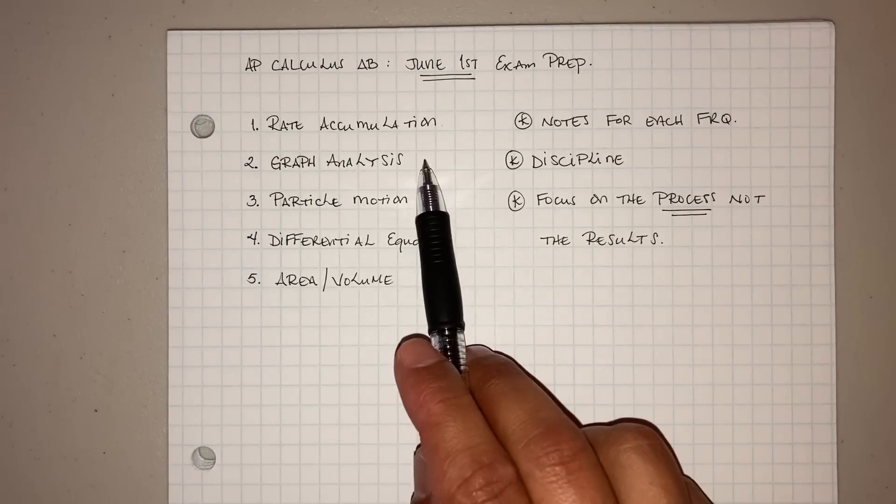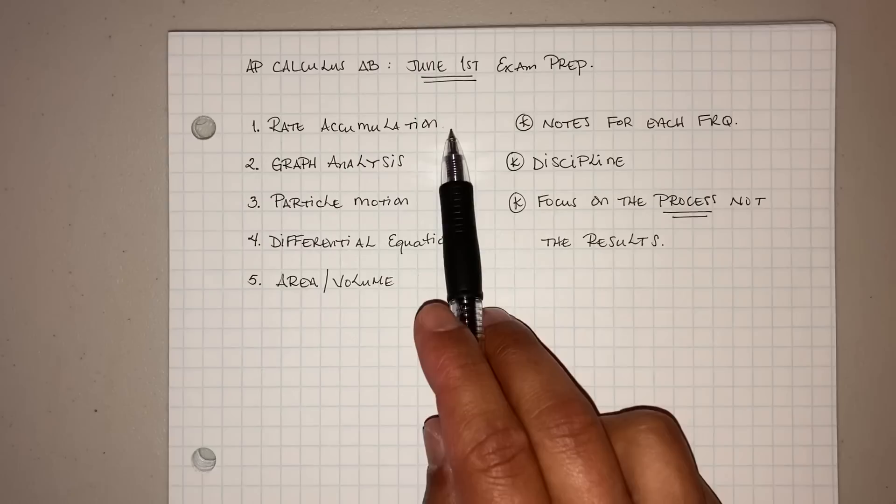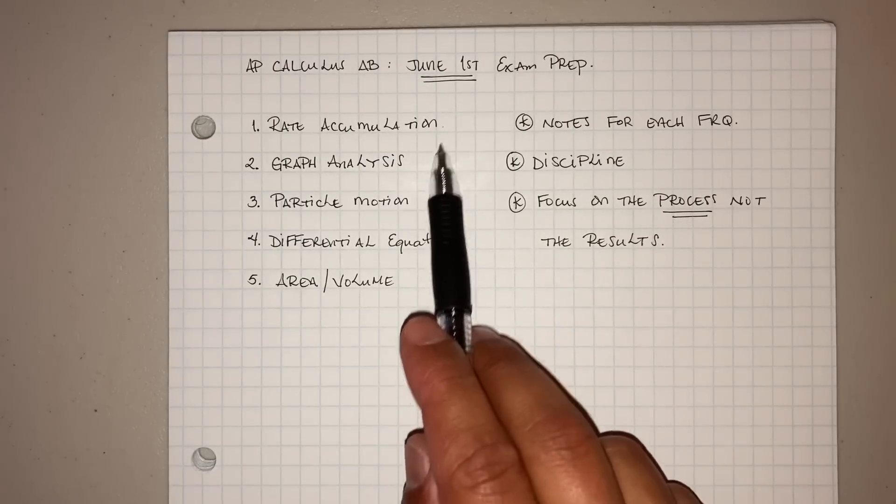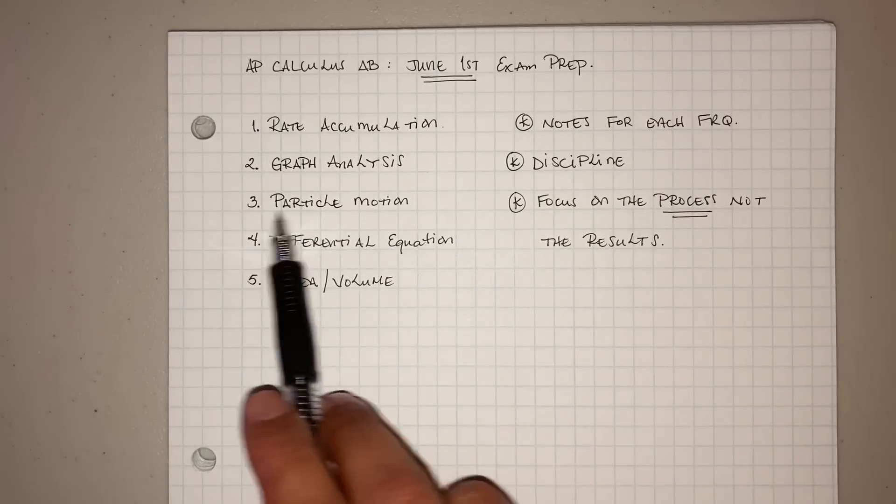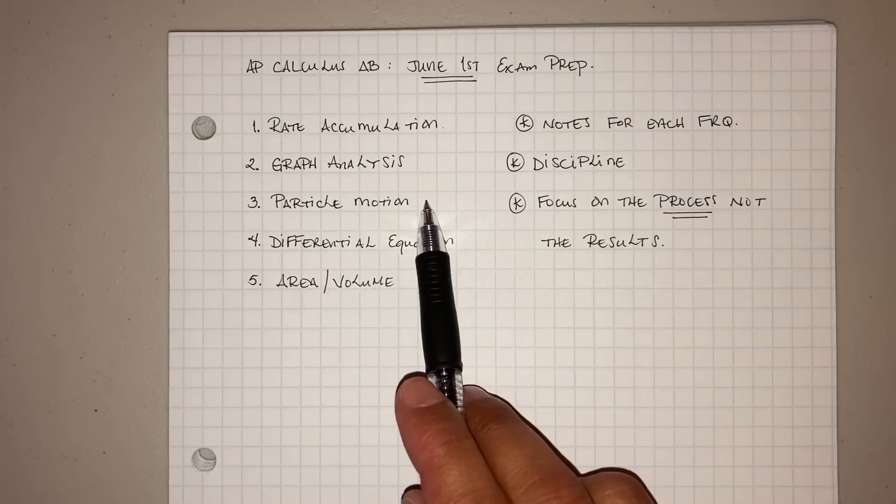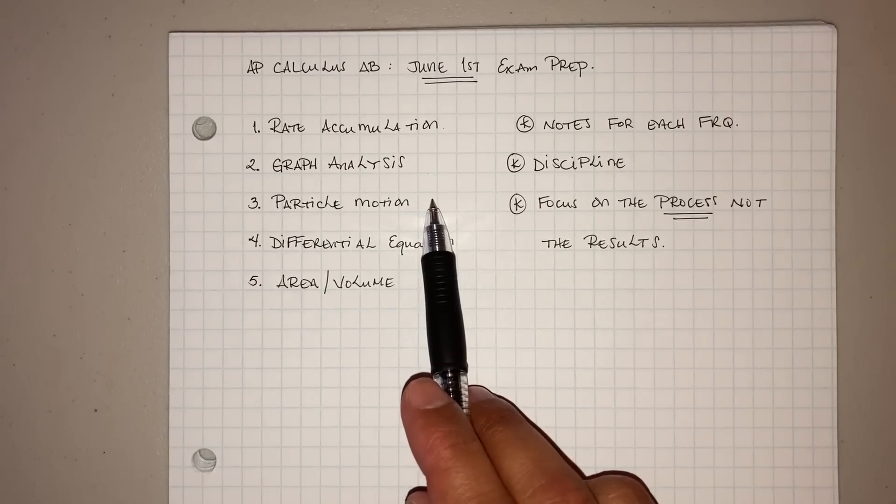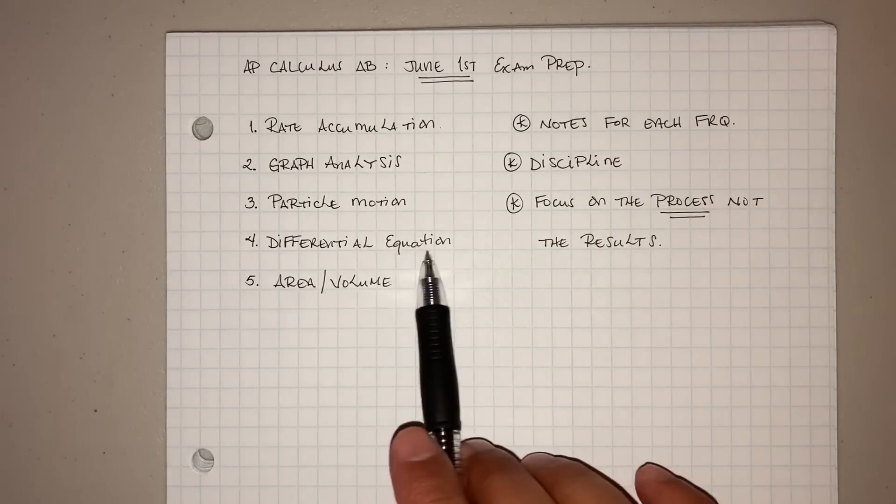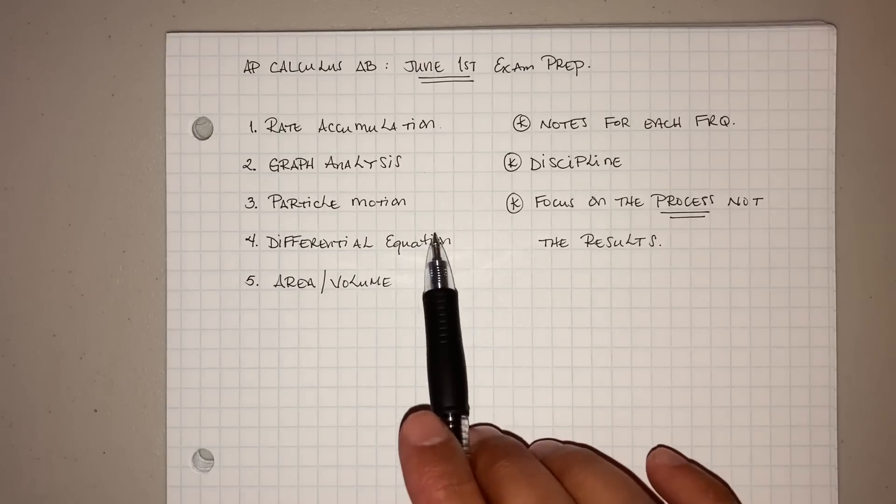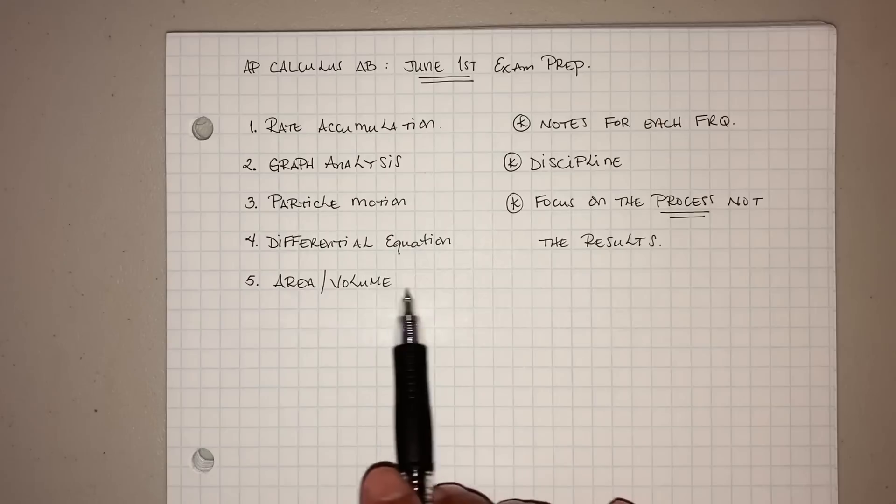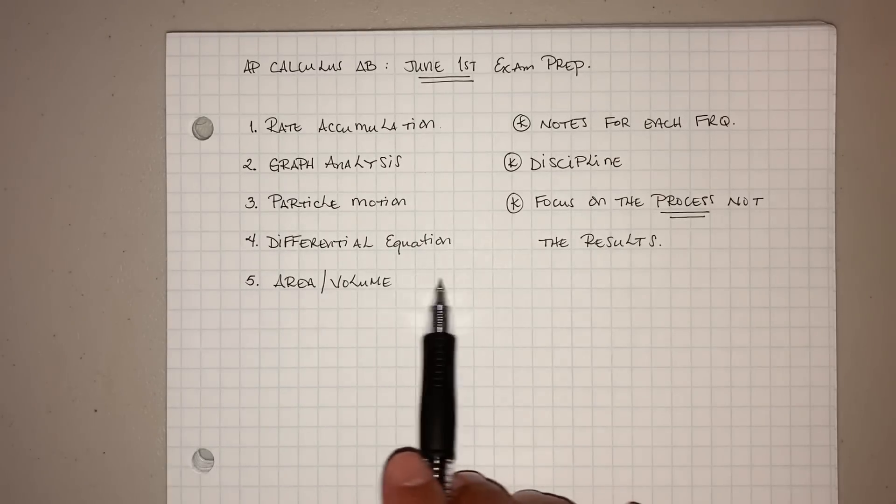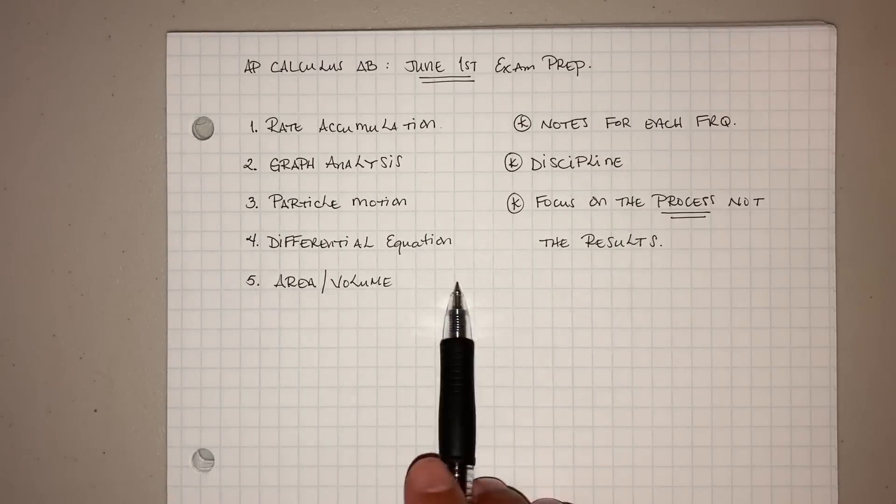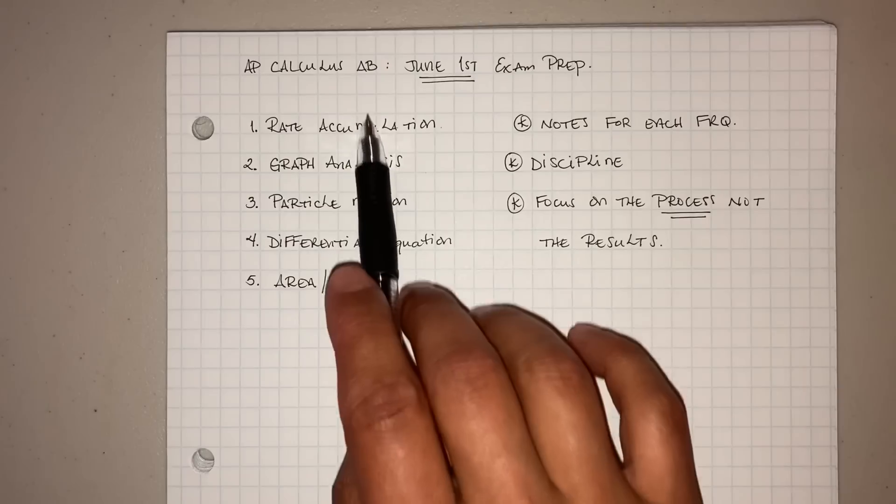You also get graph analysis every single year. Particle motion, that's also in there every single year. That's why they're my top three. And then differential equation, that's kind of every other, but that one's also common. And then the area and volume. Remember, area and volume is not going to be on it this year.